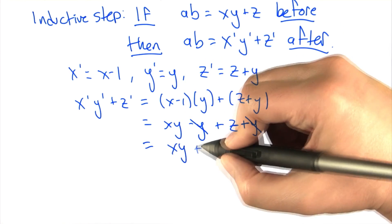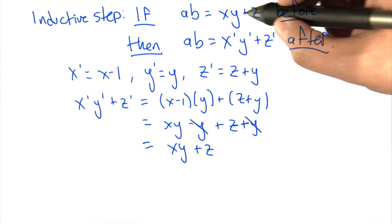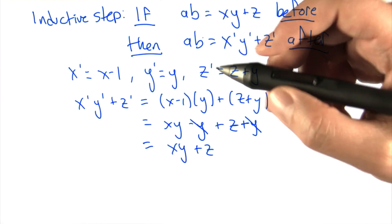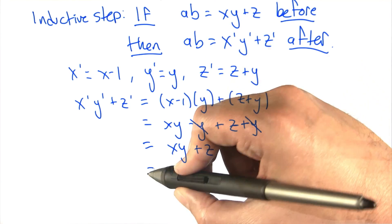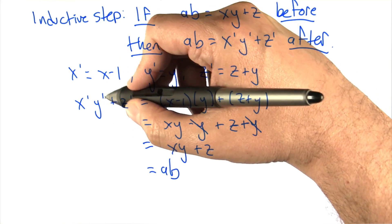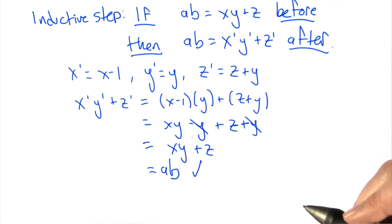But notice what we assumed. We said if it was the case that XY plus Z is equal to AB, then what we're showing is that X prime Y prime plus Z prime is equal to AB. Well, guess what? We showed that. X prime times Y prime plus Z prime does indeed equal AB if it was true at the top of the loop.